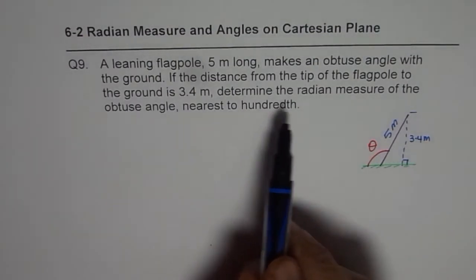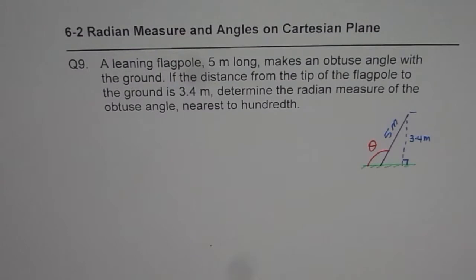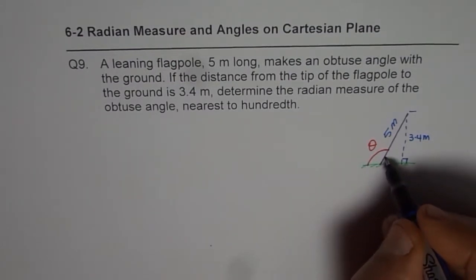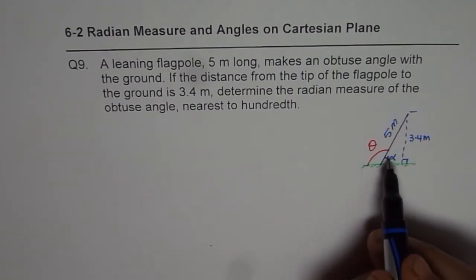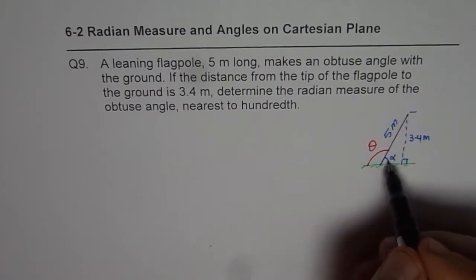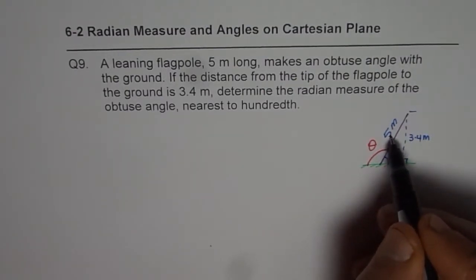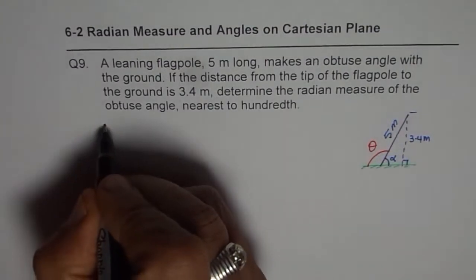We need to find the angle theta in radians. So let us first find this angle alpha. Then we can find theta by taking away alpha from 180 or pi. Now in the given triangle what are we really given? We are given the side which is opposite to angle alpha and the hypotenuse.